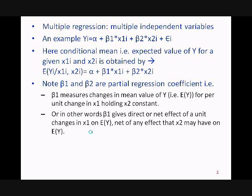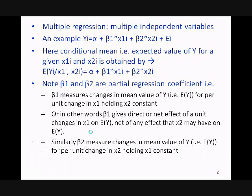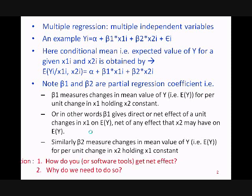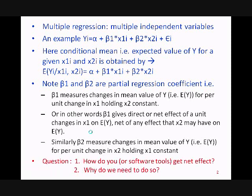Similarly, β2 measures changes in mean value of y for per unit change in x2, holding x1 constant. Now the two questions: how do you get the net effect of x1 on y or net effect of x2 on y, and why do we need to do this? We'll understand both with the help of an example.